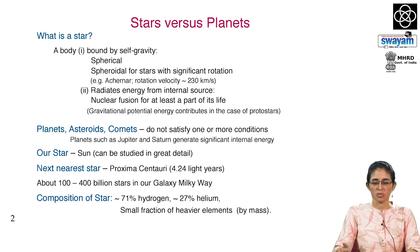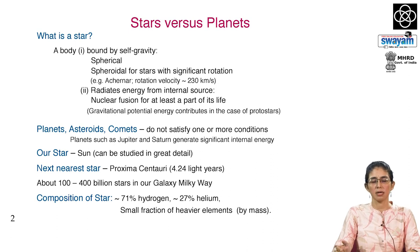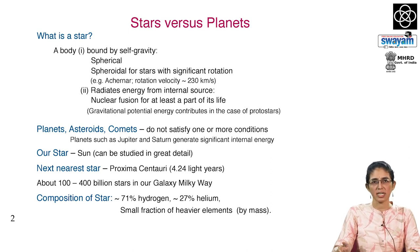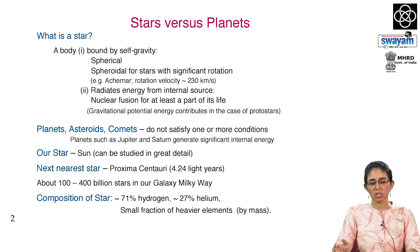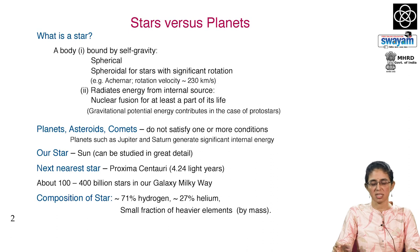A nuclear energy source is what we generally understand about stars. Using this definition, planets, asteroids and comets are not stars because they do not satisfy either condition. Asteroids and comets are not bound by self-gravity, and for planets the dominant source of energy is reflection of light from the sun. Although planets may have some very little internal source of energy, they do not come under the category of stars.